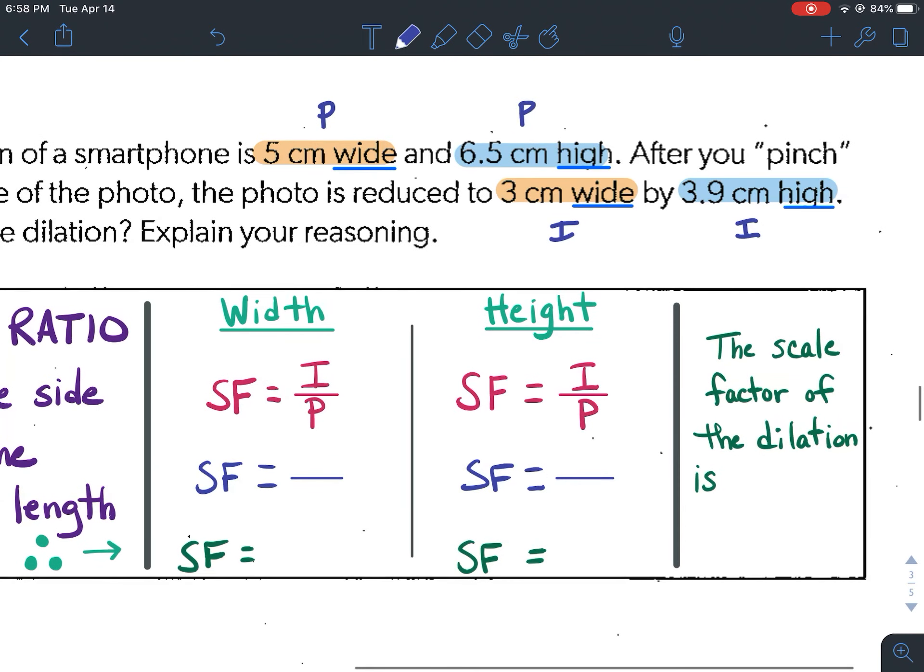Okay, so using the numbers up above for the width, obviously we're going to use the words that say wide, 5 centimeters wide and 3 centimeters wide. Which number would go on top? Well, I need the number from the image and the 3 is from the image. So I'm going to put 3 in the numerator and the width for the pre-image is 5.